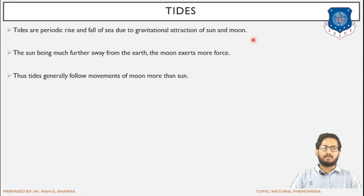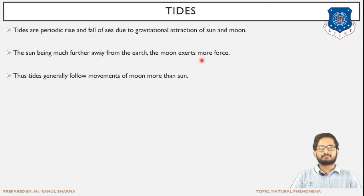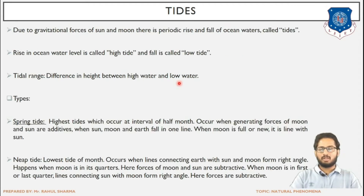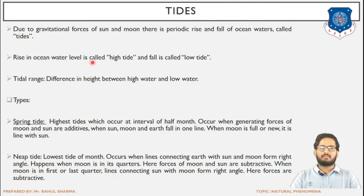We have already seen various diagrams showing high tidal level and low tidal level. The sun is much further away from Earth, but the moon exerts more force as the distance between Earth and moon is very less compared to Earth and sun. So the main force is the gravitational force of the moon rather than the sun. The rise in ocean water level is called high tide and the fall is called low tide.